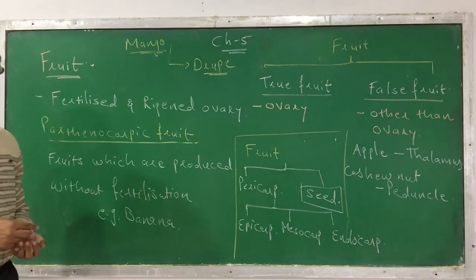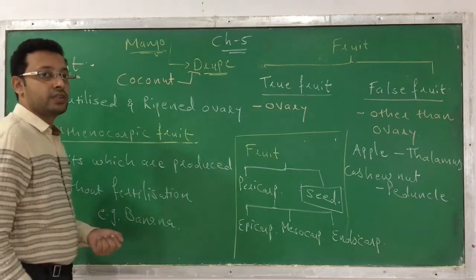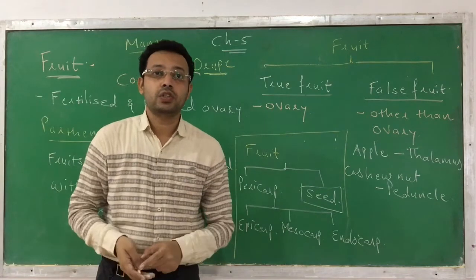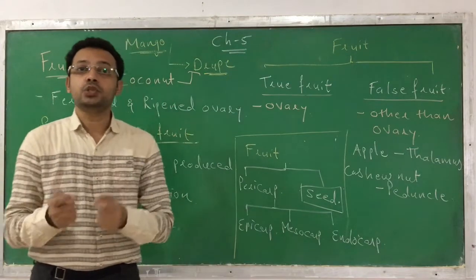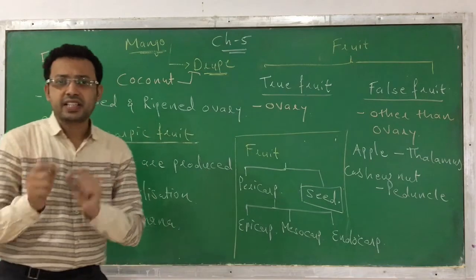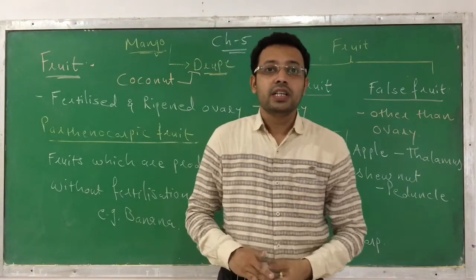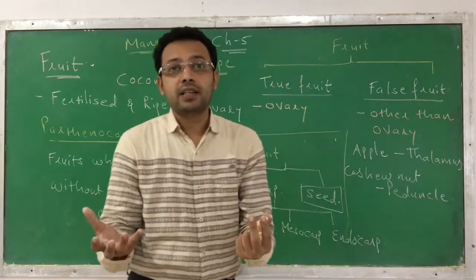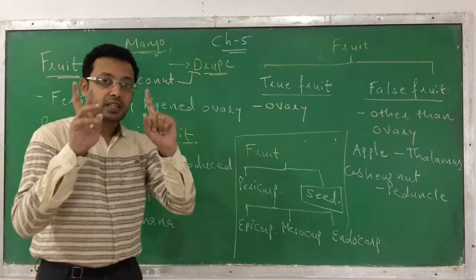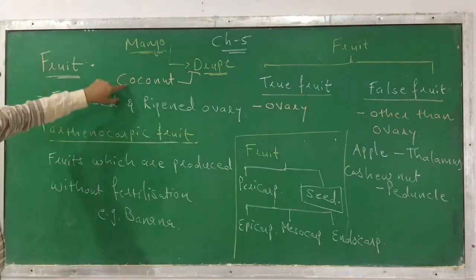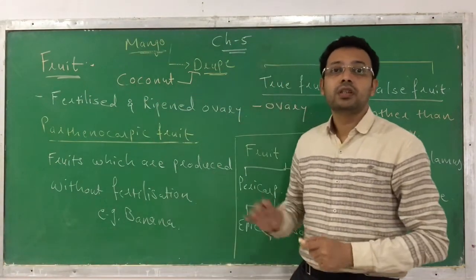This kind of fruit — with these characteristics — is called a drupe fruit. The mango and the coconut are both examples of drupe fruit. In the case of coconut, the mesocarp is fibrous in nature rather than succulent and juicy. In tomato and orange, the endocarp is not hard. But for now, remember that mango and coconut are examples of drupe fruit.